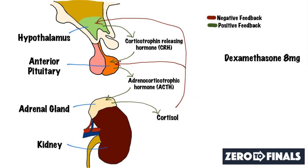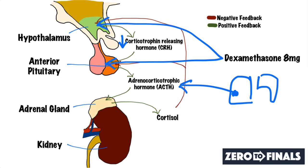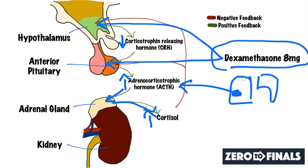Now let's look at the final scenario where you have a lung cancer or some other neoplasm pumping out ectopic ACTH. You give dexamethasone — it suppresses CRH at the hypothalamus and stops ACTH production at the pituitary — but you still have loads of ACTH because it's being produced from the cancer in the lungs. As a result, it continues to stimulate the adrenal gland and cortisol remains high. So in paraneoplastic Cushing's, a high dose dexamethasone test leads to raised ACTH and raised cortisol.